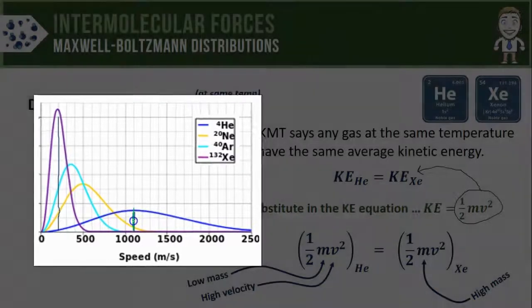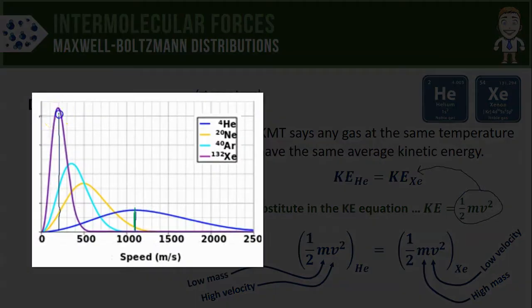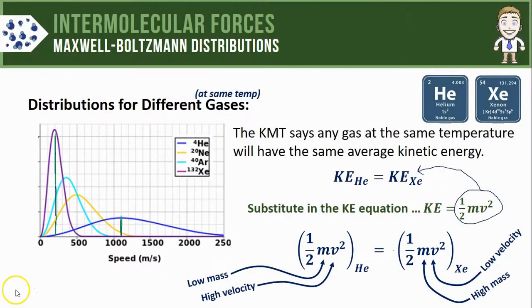At the same time, my xenon particles with a much greater mass, the only way they are going to equal the kinetic energy of the lighter heliums is if the velocity is much lower. That's why on the distribution my xenon particles, most of them are traveling at a much slower speed.